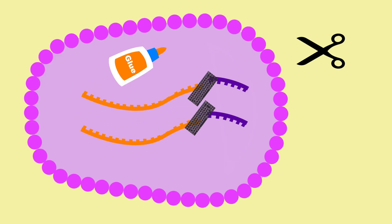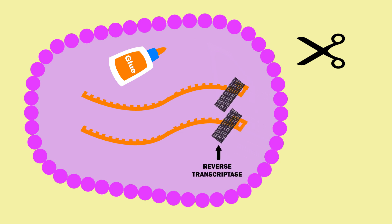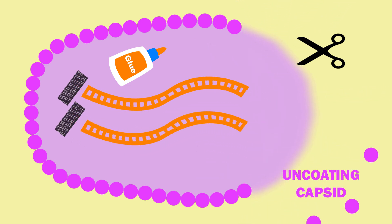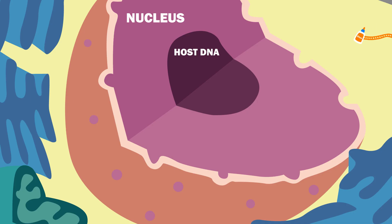HIV's single-stranded RNA gets reverse transcribed by reverse transcriptase into a double-stranded piece of DNA. As the reverse transcriptase goes about this process, the capsid uncoats. The double-stranded piece of DNA associates with integrase and is brought into the nucleus. There, integrase integrates the HIV DNA into the cell's genome.